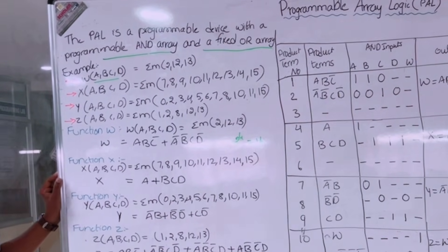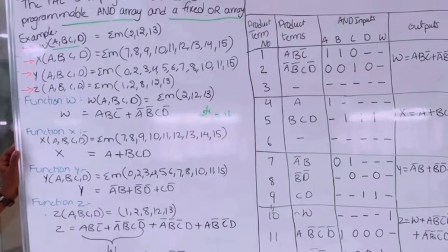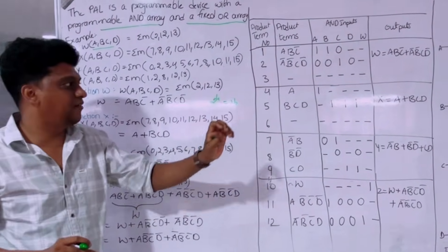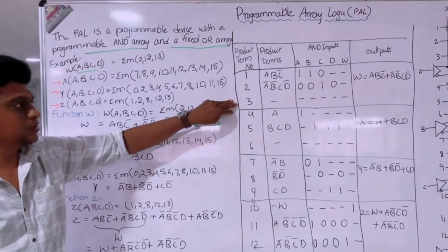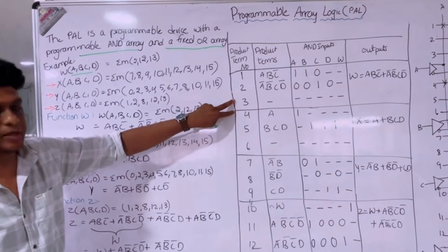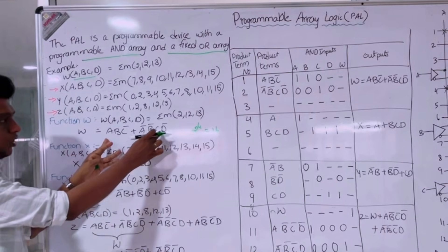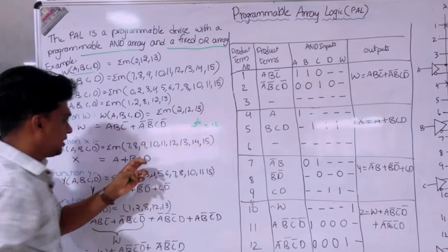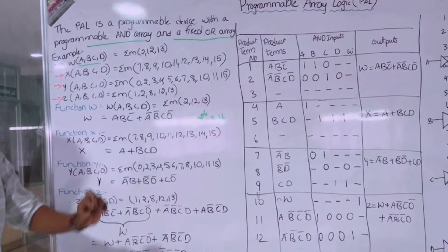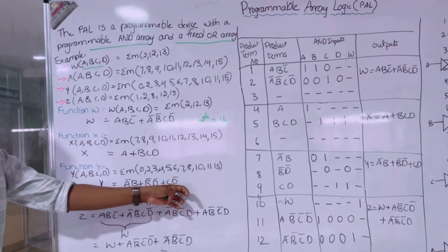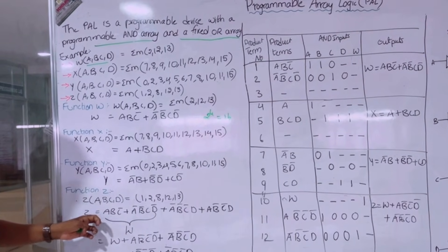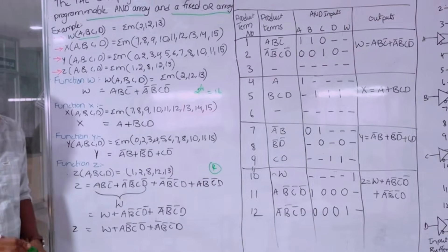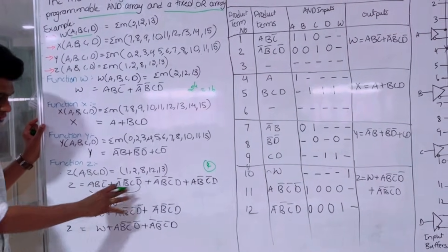For Z, we get a function after KMAP implementation. But as per the rule of PAL, every function must have exactly three product terms — that is mandatory. In the programming table, three product terms are mentioned. If a function has only two terms, we put a dash for the third. Here, Z has four terms, but we must reduce it to three product terms.